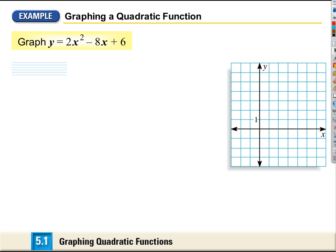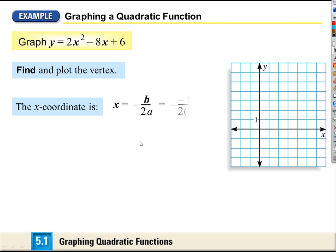Let's look at a quick example. If we start with y equals 2x squared minus 8x plus 6, then a equals 2, b equals negative 8, and c equals 6. The formula for the x-coordinate of the vertex is negative b over 2a. So I plug in: negative of negative 8, over 2 times 2, which gives 8 over 4 — that's positive 2. So the x-coordinate of my vertex is 2.